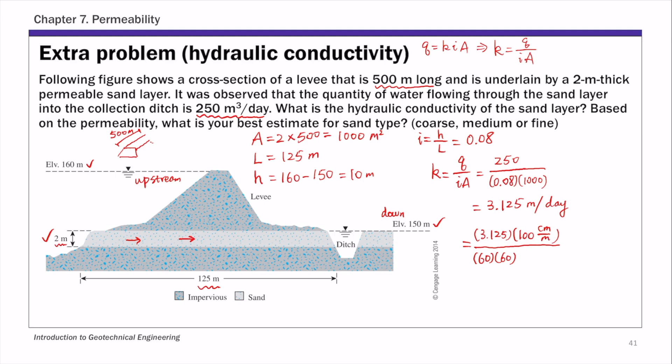This gives you seconds per day for the unit conversion. This yields 0.0036 centimeters per second.